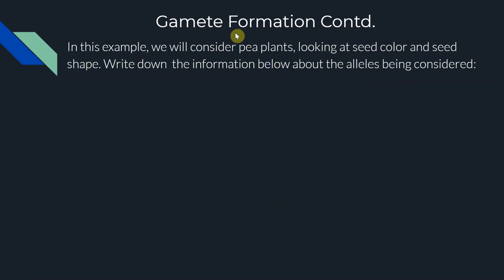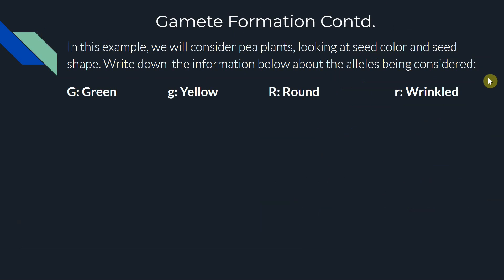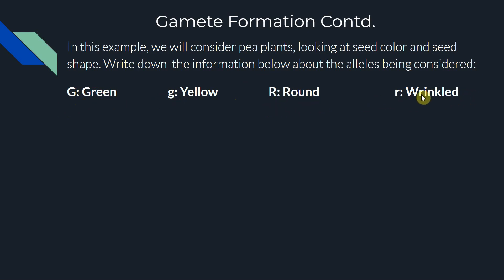We're going to consider an example with pea plants, looking at two traits: seed color and seed shape. When we consider two genes, we need to use two different letters. For seed color, big G stands for the green allele and little g stands for the yellow allele. For seed shape, big R is a round seed shape and little r is a wrinkled seed shape. Write down these four alleles — we're going to use them.